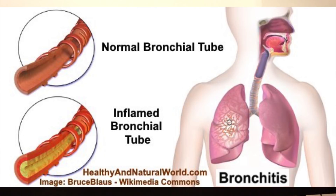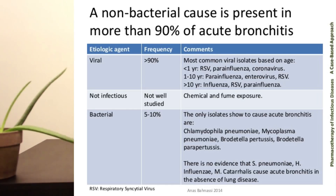Acute bronchitis is viral. It's a cough due to inflammation of the bronchi itself, and typically it starts as an upper respiratory infection and moves down into the bronchi causing inflammation and thus the cough. The technical definition is inflammation of the trachea and large airways without evidence of pneumonia. The most common organisms are influenza A, influenza B, coronavirus, rhinovirus, and enterovirus.